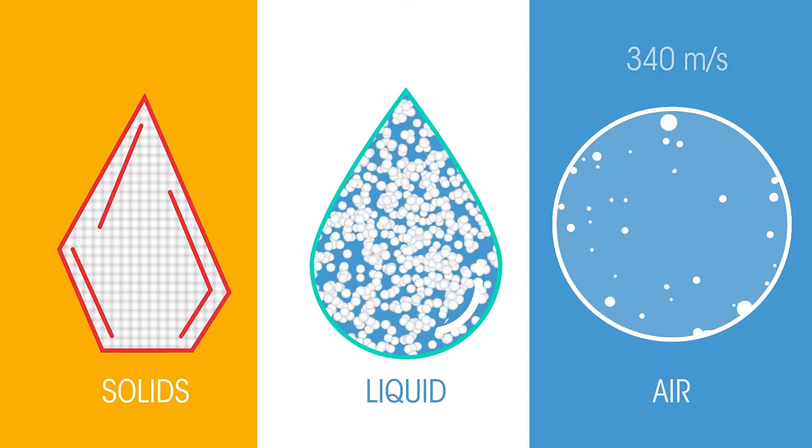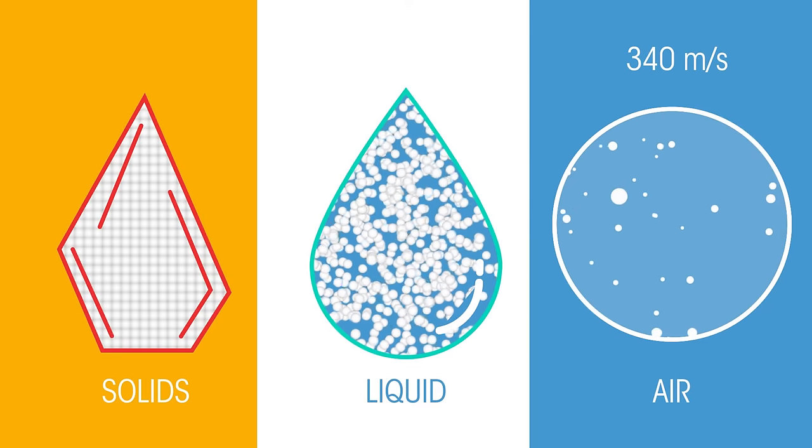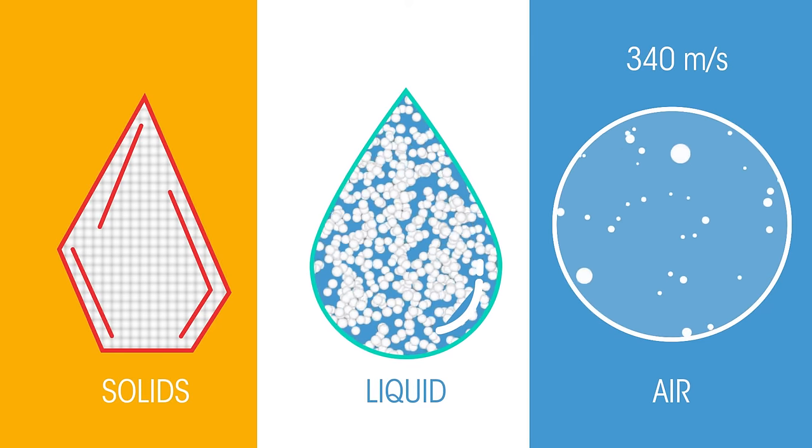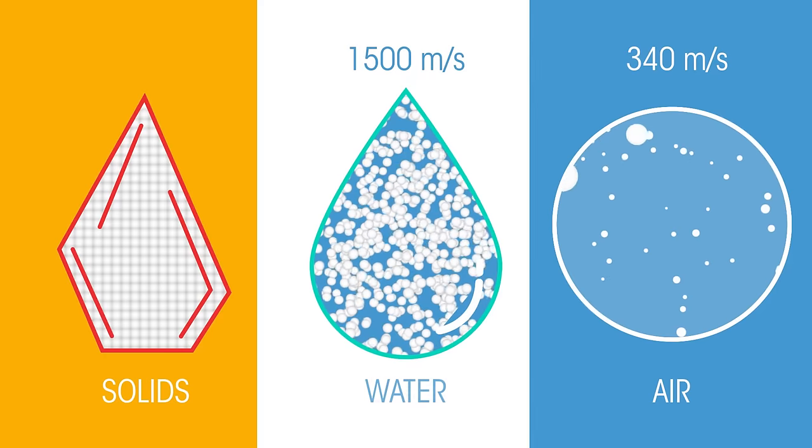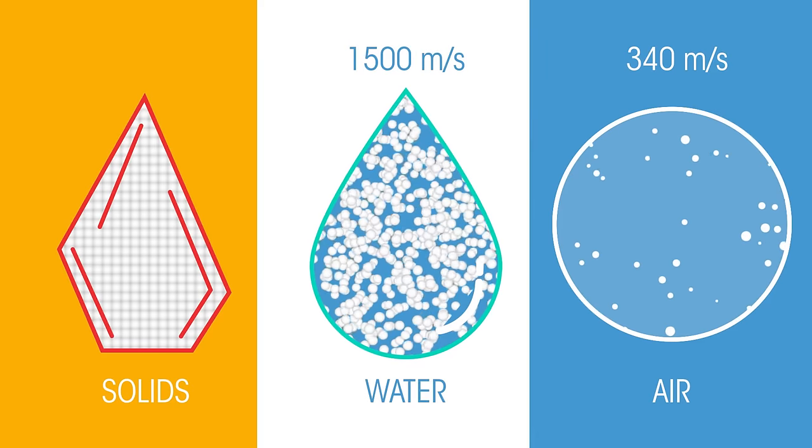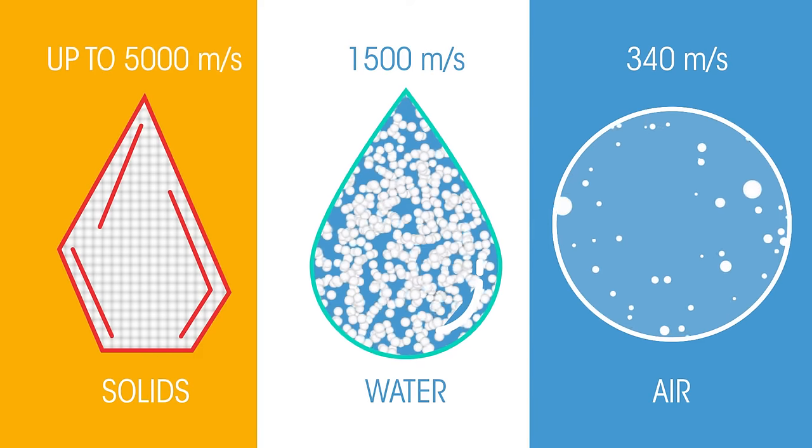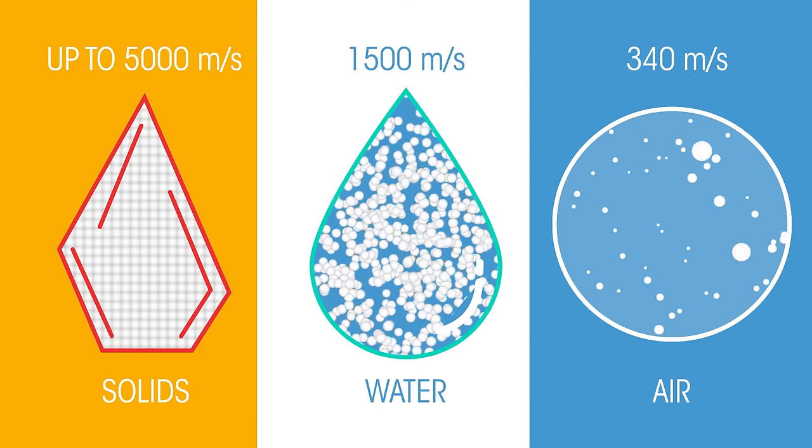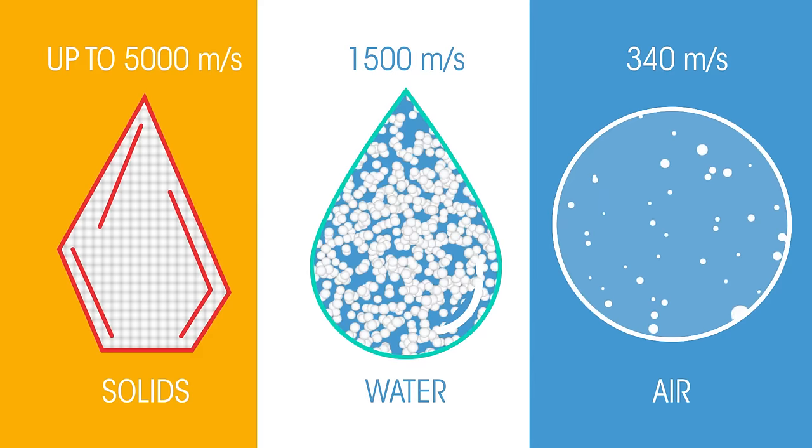So sound travels at about 340 meters per second in air. In water it travels at 1,500 meters per second. While in some solids sound can travel at up to 5,000 meters per second. That's incredibly fast compared to air.